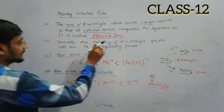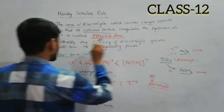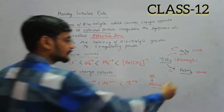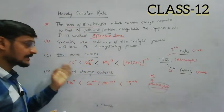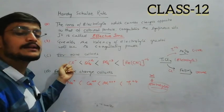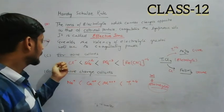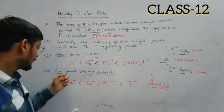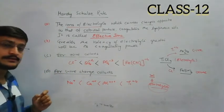Here we have another point: Greater the valency of electrolyte, greater will be its coagulating power. In an electrolyte, whichever ion is responsible for coagulation - positive or negative - the more charges it has, the more coagulation power it will have.